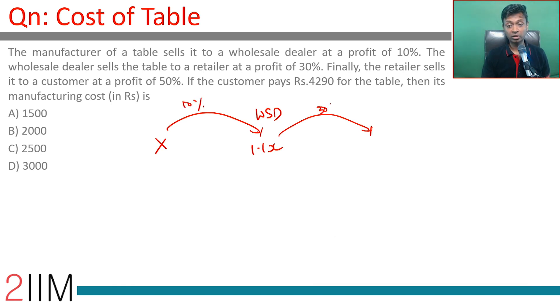This is 10 percent, this is 30 percent, so he sells it at 1.1x into 1.3. Finally, the retailer sells it to a customer at a profit of 50 percent. He sells it at 1.1x into 1.3x into 1.5x.